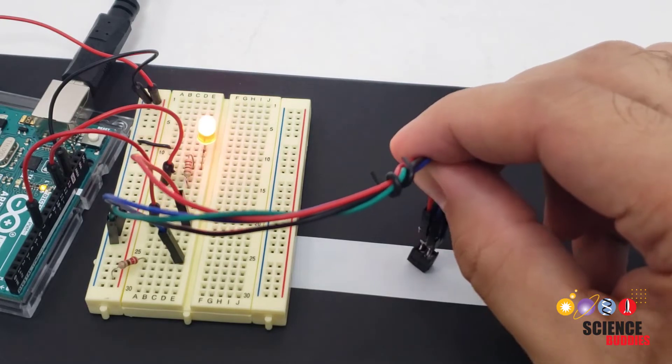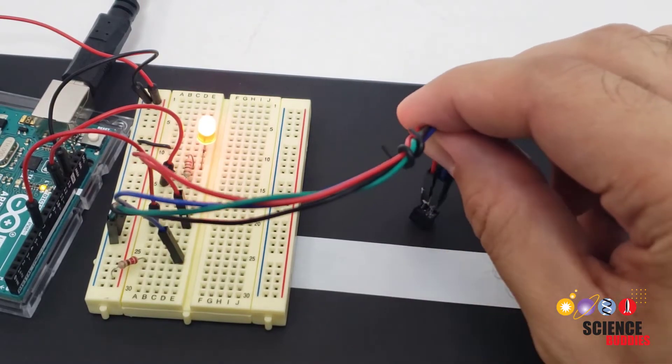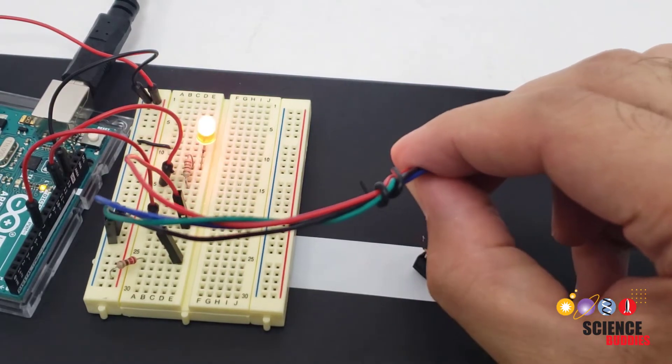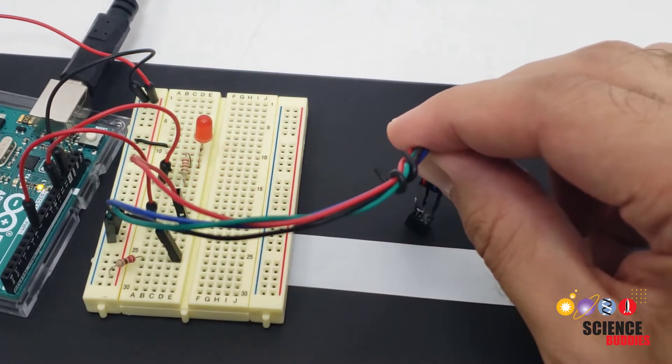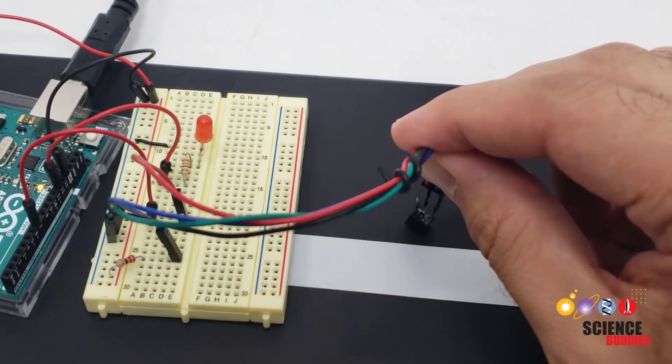Another common use is to detect the difference between light and dark surfaces. You can see here that when I move the sensor back and forth the LED only lights up when the sensor is over the white piece of tape.